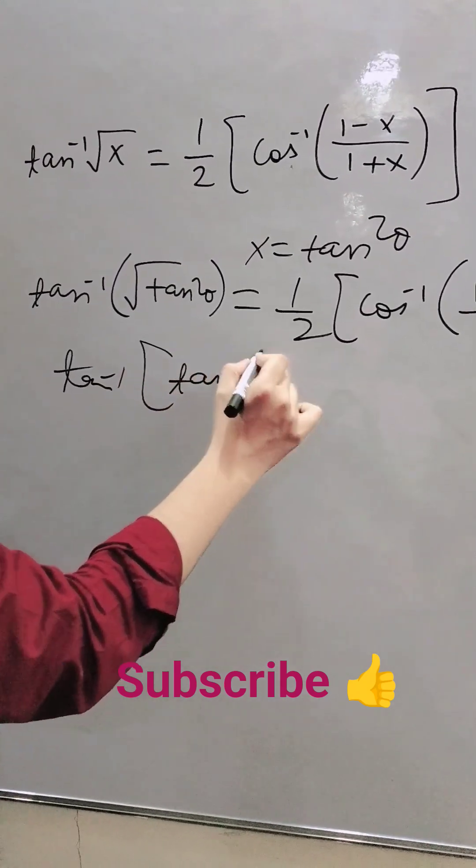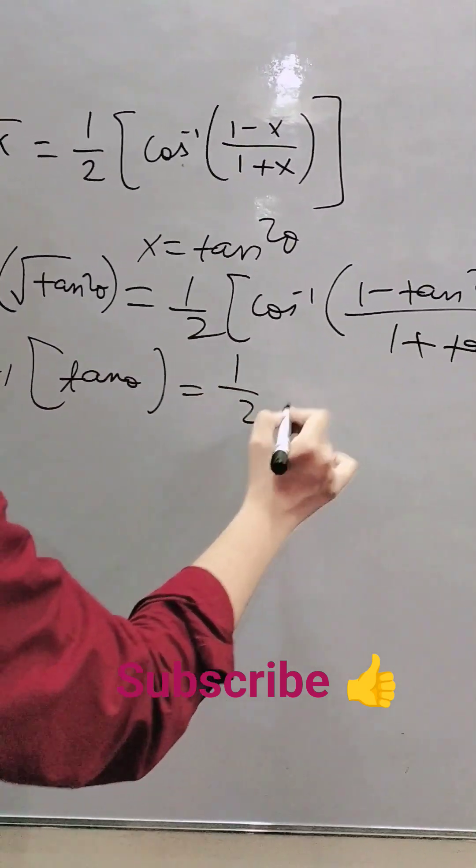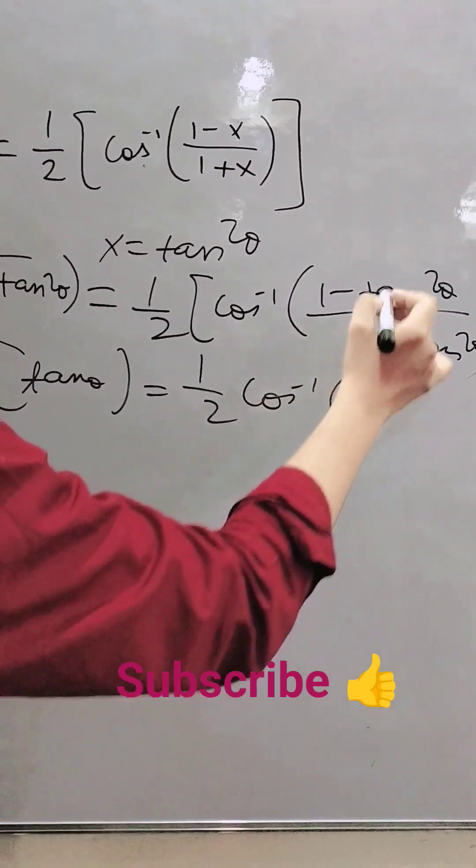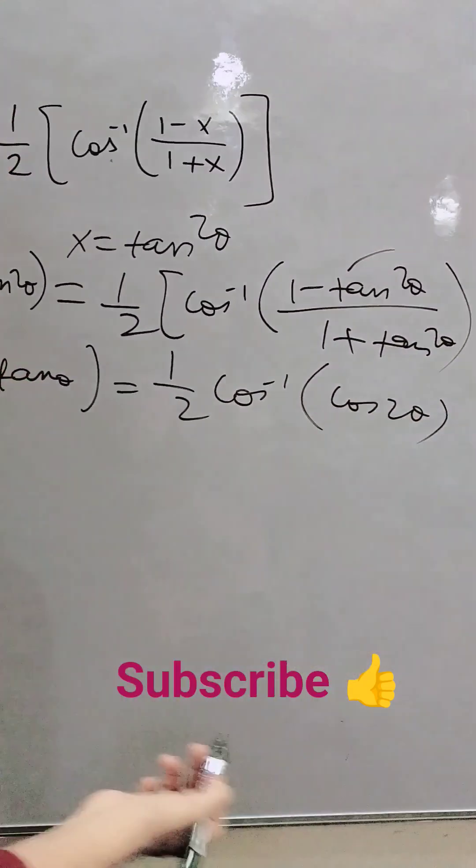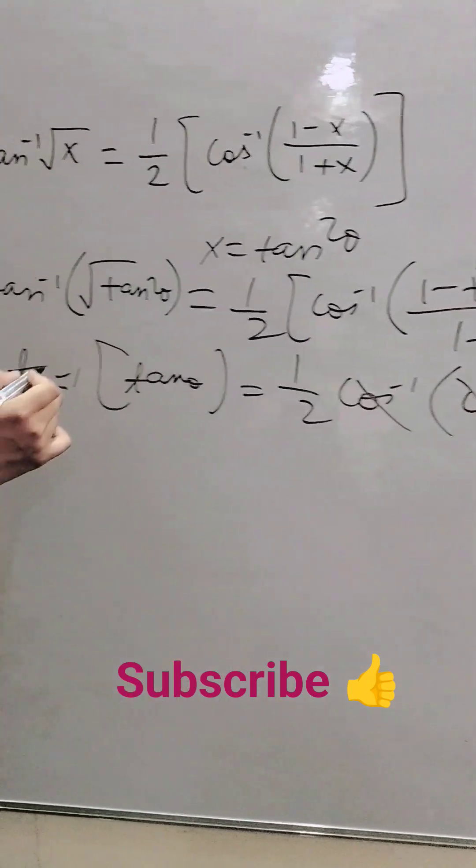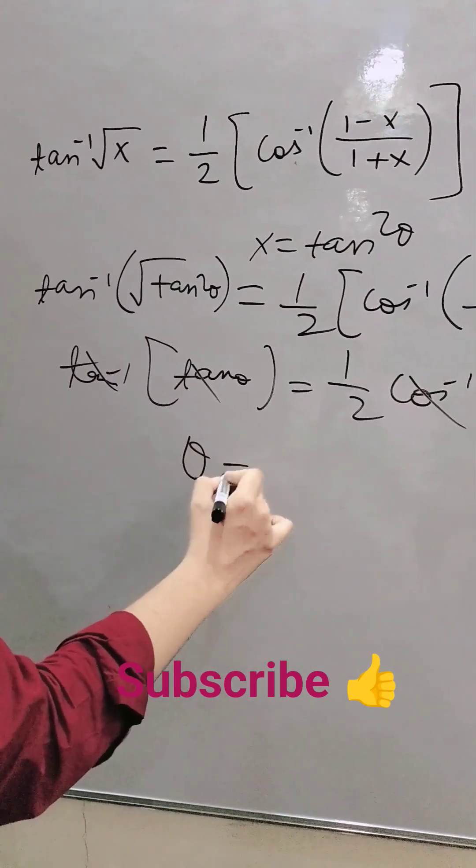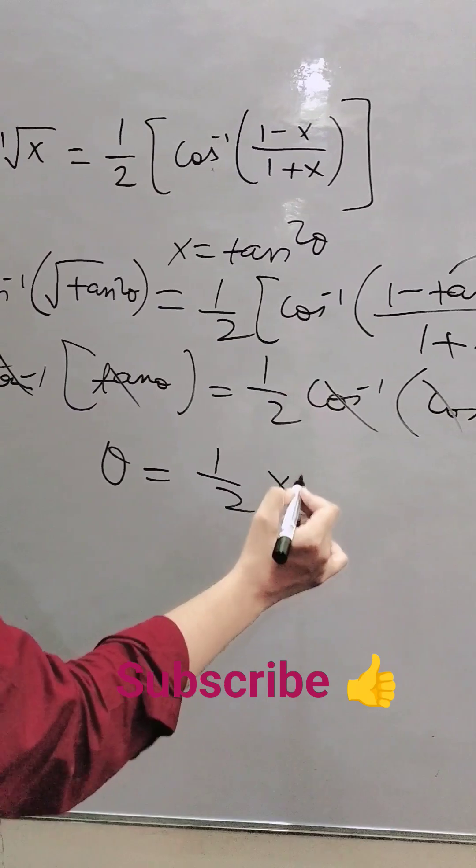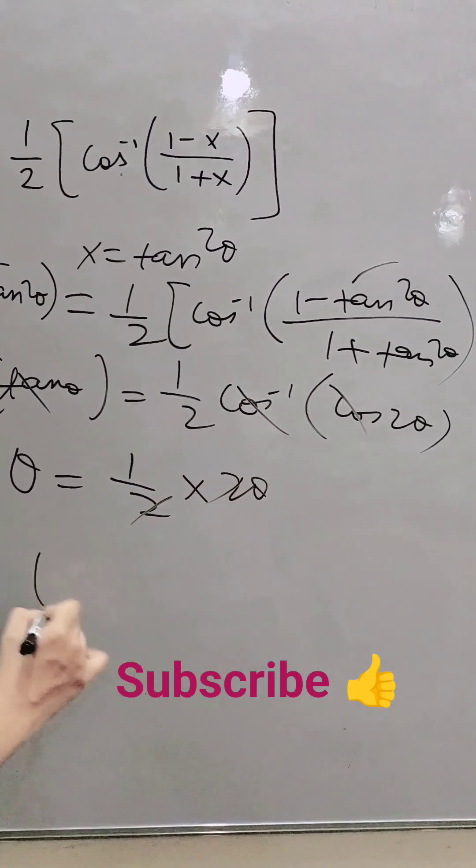(1/2)cos⁻¹(cos2θ). This is the cos 2θ formula. So this cancels out, and θ equals (1/2) × 2θ. Canceling gives θ = θ, and it's proved.